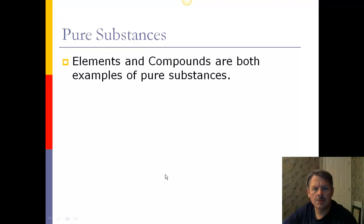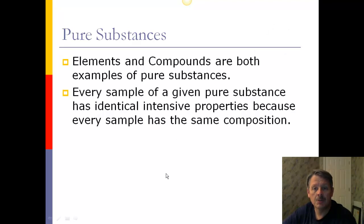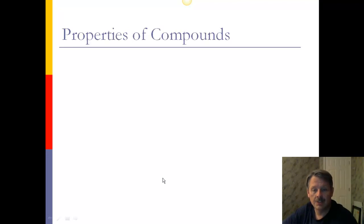Pure substances, we sometimes call them just substances. Elements and compounds are both examples of pure substances. And every sample of a given pure substance has identical intensive properties because every sample has the same composition. It doesn't matter how much water you have, it's still going to be clear. For example, it doesn't matter how much water you have, it's still going to have the same density. Those are intensive properties.